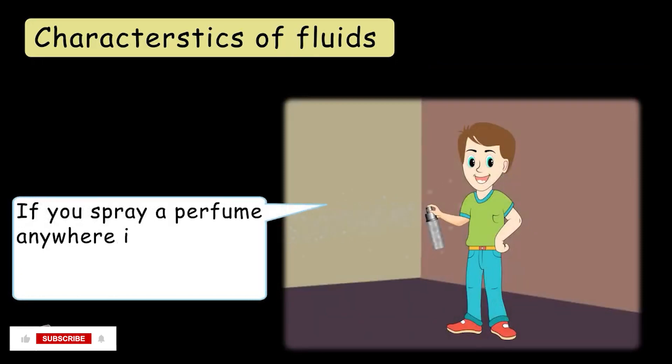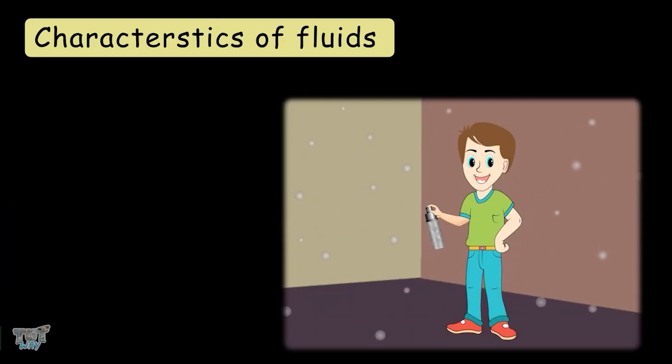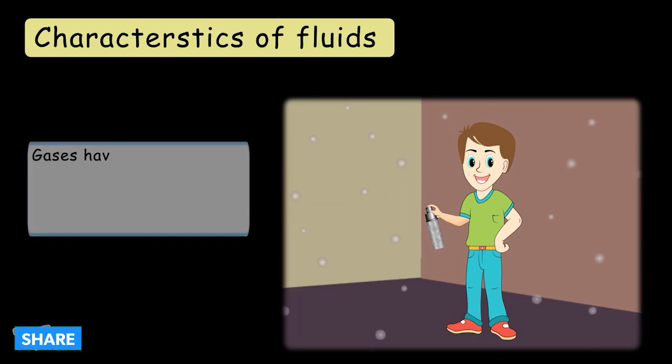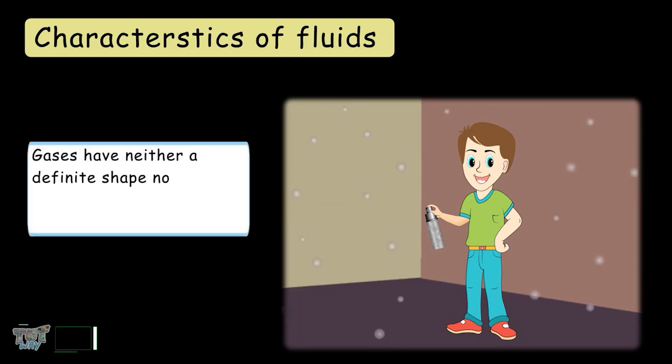For example, if you spray a perfume anywhere in the room, the smell quickly fills the room. There is no fixed volume of gases. So, gases do not have a definite shape nor a definite volume.